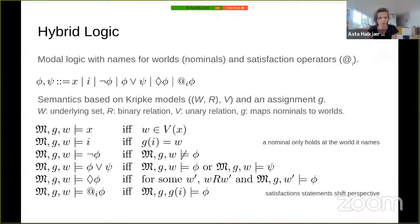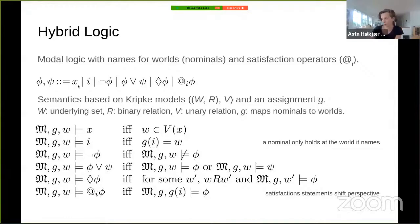Hybrid logic is modal logic with names for worlds, called nominals. For each nominal we have a satisfaction operator, written with the at-symbol. Propositional symbols are written X, and nominals A, B, C, I, J, and K. The logic has negation, disjunction, the diamond modality, and satisfaction statements.